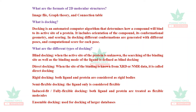Different types of docking: blind docking — when the active site of the protein is unknown, searching of the binding site is made through blind docking. Direct docking — when the binding pocket is known, such as when you obtain the protein from the Protein Data Bank. Rigid docking — both ligand and protein are considered as rigid bodies and neither moves.